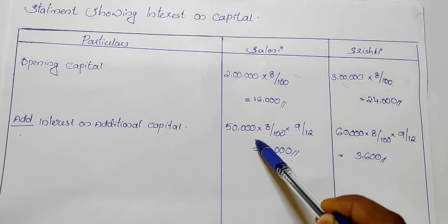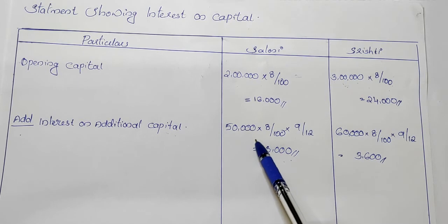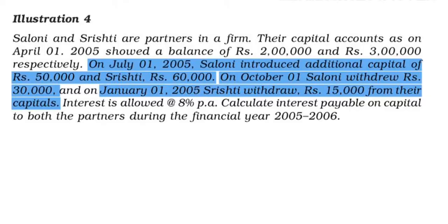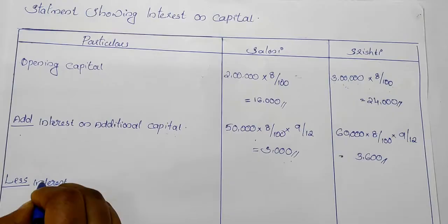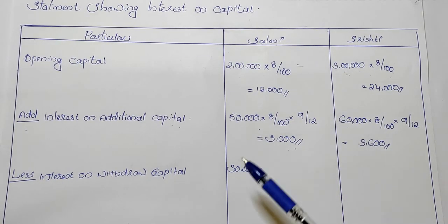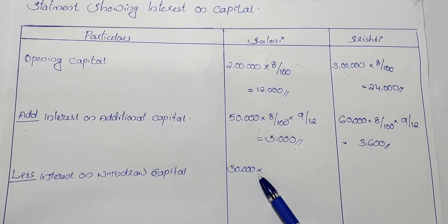We need to deduct the amount of interest. The interest will benefit the person. We need to deduct the amount of interest. First, we will calculate the amount of interest for Saloni, which is equal to 35 million.